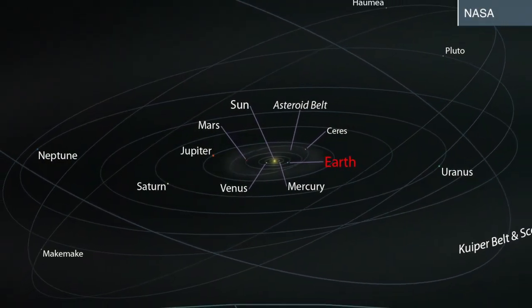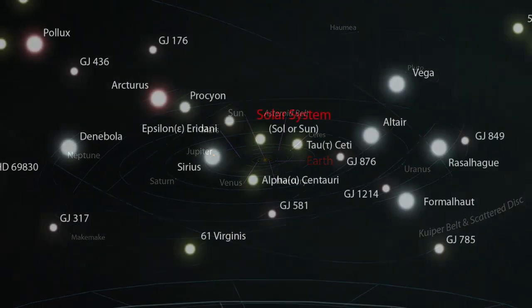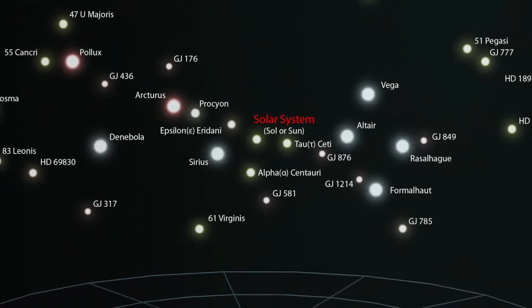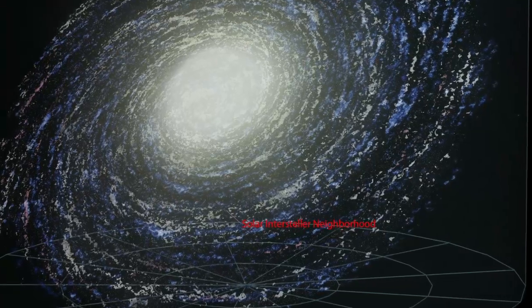We start with our solar system, home of our life-giving sun and all of our planetary neighbors we know so well. From there, we move out to the solar interstellar neighborhood. And from this neighborhood, we back out into our home galaxy, the Milky Way.